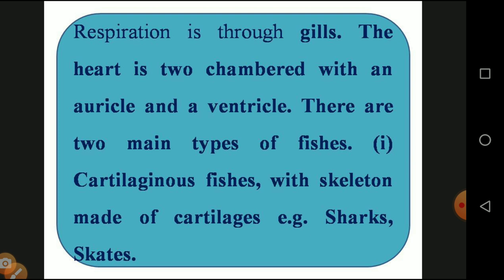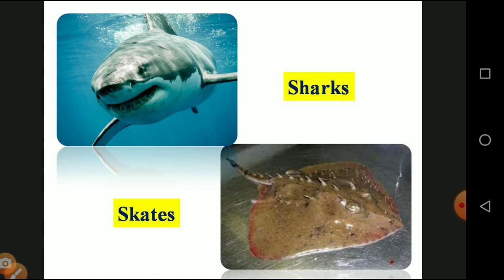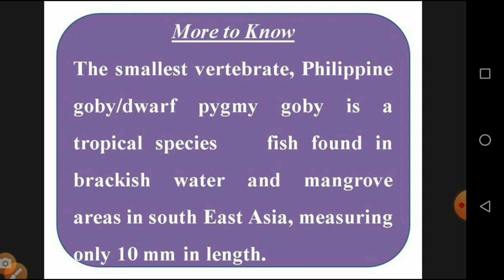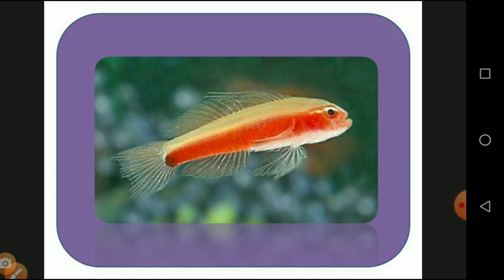There are two main types of fishes: cartilaginous fishes, whose skeleton is made of cartilage — examples are sharks and skates — and bony fishes, whose skeleton is made of bones — examples are catla and millets. More to know: the smallest vertebrate, Paedocypris progenetica (dwarf pygmy), is a tropical species of fish found in the brackish water of mangrove areas in Southeast Asia, measuring only 10 millimeters in length.